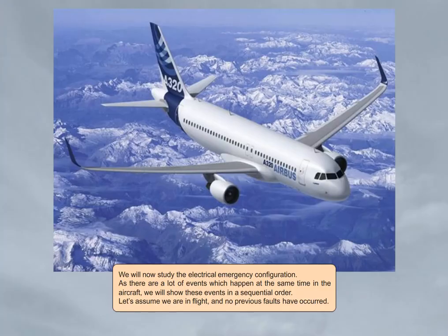We will now study the electrical emergency configuration. As there are a lot of events which happen at the same time in the aircraft, we will show these events in a sequential order. Let's assume we are in flight and no previous faults have occurred.